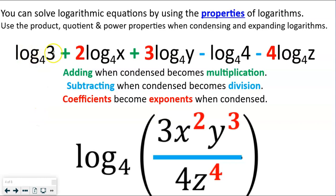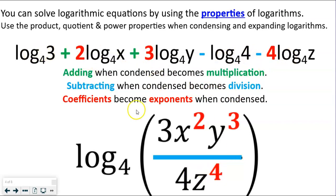We have log base 4 of 3, plus 2 times log base 4 of x, plus 3 times log base 4 of y, minus log base 4 of 4, minus 4 times log base 4 of z. When we have addition signs, we multiply those terms. When we are subtracting, those terms become division when we condense — they go to the bottom, while the addition terms stay on top.